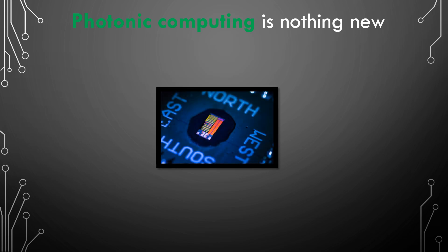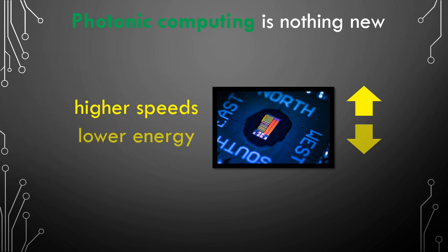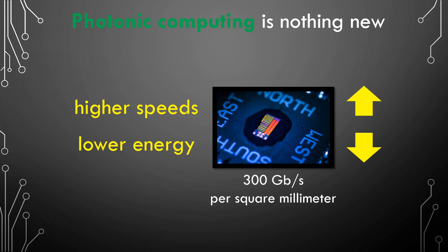This particular processor is able to transfer data at higher speeds with lower energy than traditional processor chips, achieving a speed about 10 to 50 times faster, at 300 gigabits per second per square millimeter.